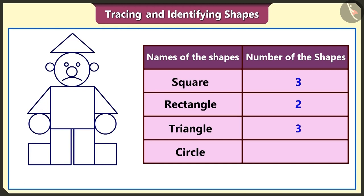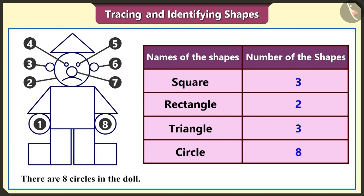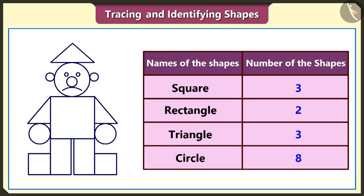Let's now count the number of circles used. Yes, there are one, two, three, four, five, six, seven and eight circles used here. We got to know that there are three squares, two rectangles, three triangles and eight circles used in the making of the doll. But why is he not smiling?